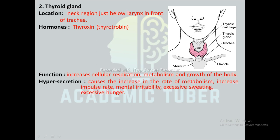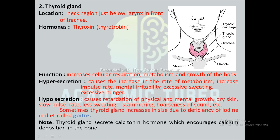Hypersecretion of thyroxine causes increased rate of metabolism, increased pulse rate, mental irritability, excessive sweating, and excessive hunger. Hyposecretion causes retardation of physical and mental growth, dry skin, low pulse rate, and less sweating. Sometimes the thyroid gland increases in size due to the deficiency of iodine in the diet, which is known as goiter. The thyroid gland also secretes calcitonin hormone, which encourages calcium deposition in the bones.